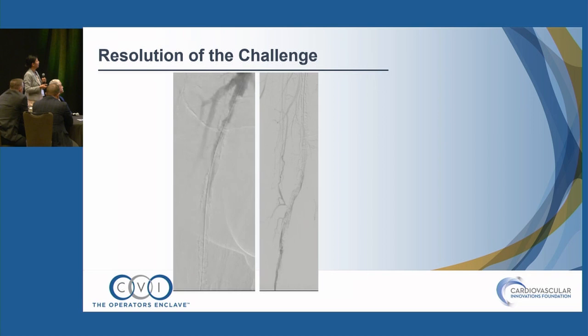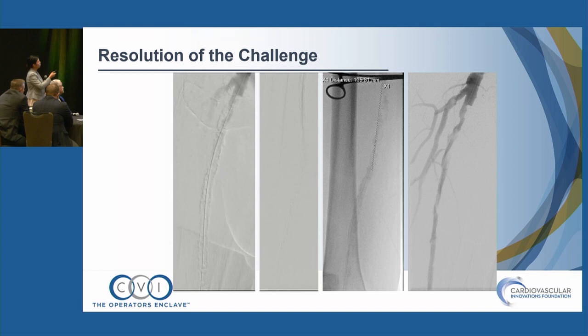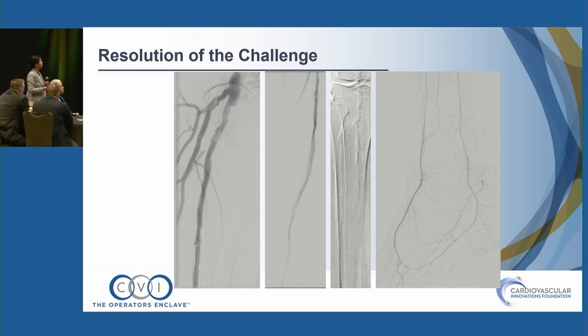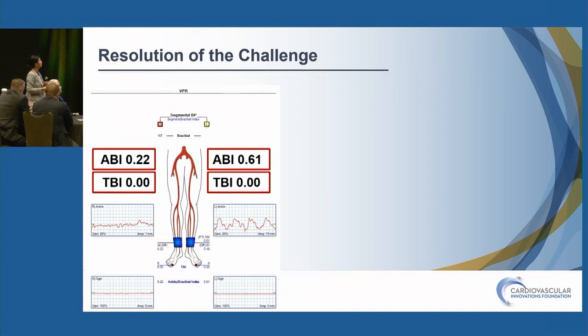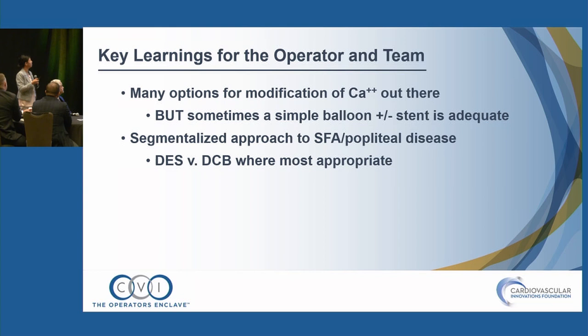After the first balloon angioplasty, I was surprised by the amount of lumen gained. Using a more segmentalized approach, I chose to skip IVL in this specific case. I did a drug-eluting stent in the mid-to-distal SFA where I had rendezvoused and created sub-intimal space, and another DES in the proximal SFA. Final runoff showed intact pedal arch and three-vessel flow to the foot. He did great — also underwent left-sided intervention, TMA on the left, and completely healed his wounds. Key takeaways: many options for calcium modification exist, but sometimes a simple balloon plus or minus stent is adequate; use a segmentalized approach; use drug-eluting stents and DCBs where most appropriate.